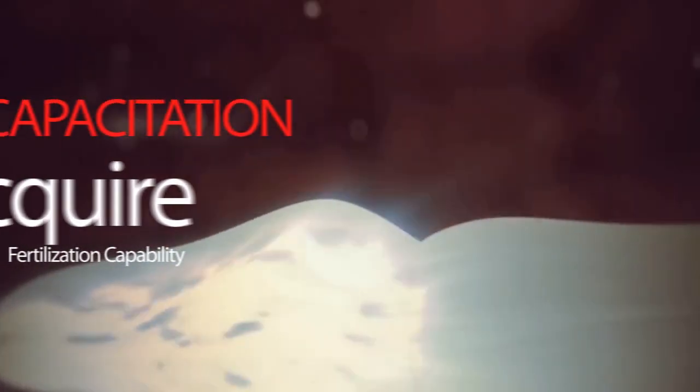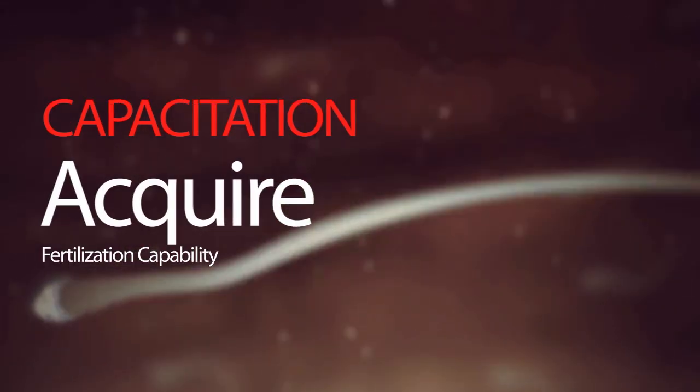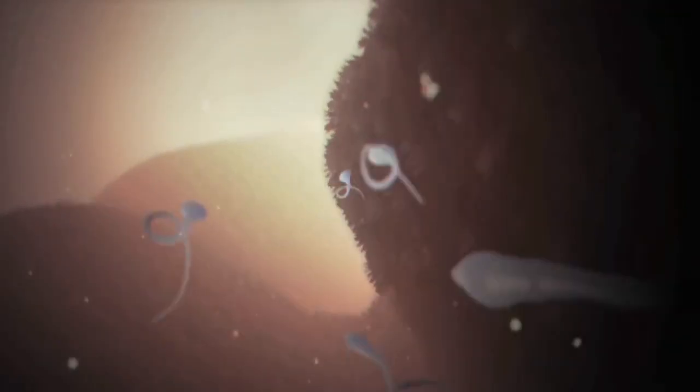The sperms increase their motility and become hyperactivated. And in the uterus, they also acquire the ability to fertilize an egg in a process called capacitation.